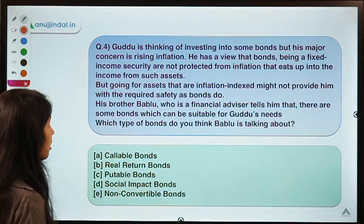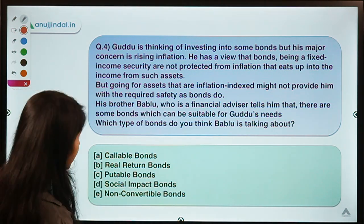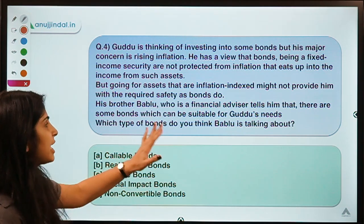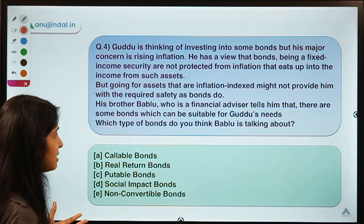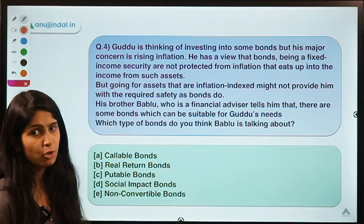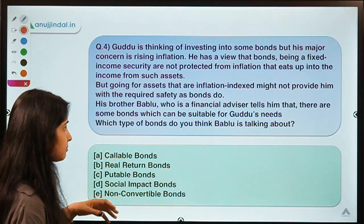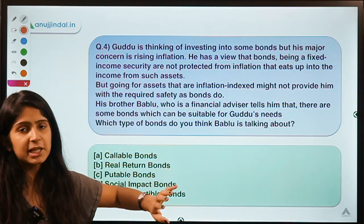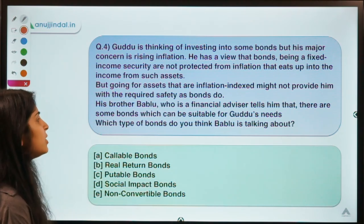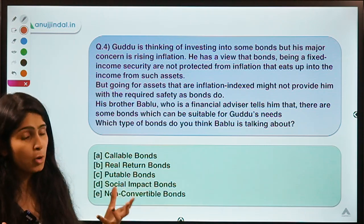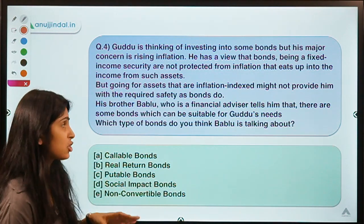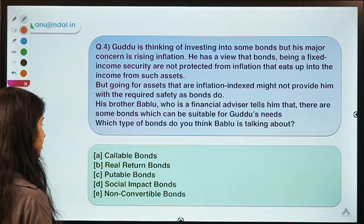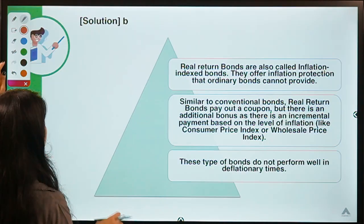Question number four: Goodu is thinking of investing in bonds but his major concern is rising inflation. He has the view that bonds, being fixed income securities, are not protected from inflation — inflation eats into the income from such assets. But going for inflation-indexed assets like equity might not provide him the safety that bonds do. His brother Bablu, who is a financial advisor, tells him there exists a category of bonds that gives both inflation protection and bond safety. Which type of bonds is Bablu talking about? The correct option is option B.